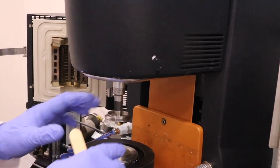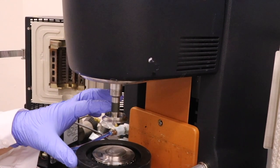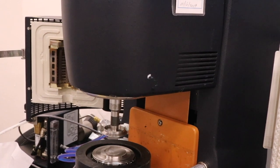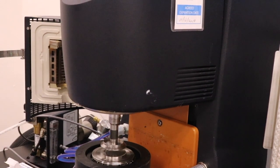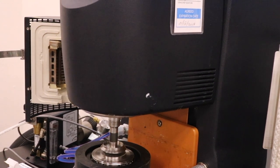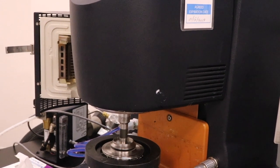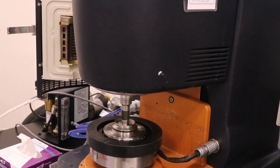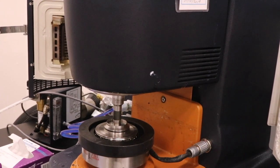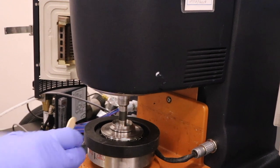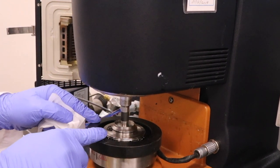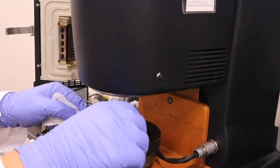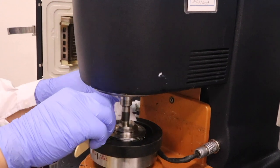And then we will lower this top plate to a 100 micrometer gap. And once the gap is totally filled with the material and reaches 100 micrometer gap, we will trim off the excess material so that they won't affect the testing result.